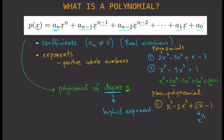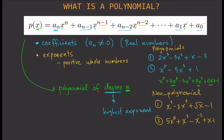One last example of a non-polynomial: 5x⁴ + x³ - x⁻² + x + 1. This is not a polynomial because of the negative exponent. There should only be positive whole number exponents, so you can't have a negative exponent — and that's the reason why this is not a polynomial.